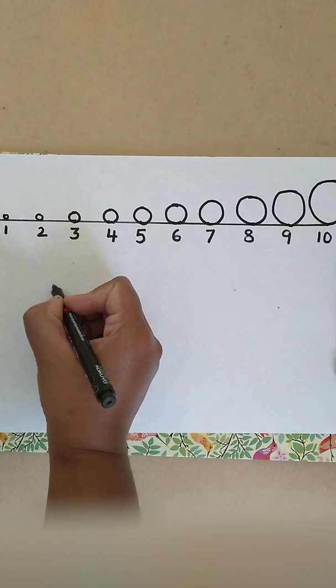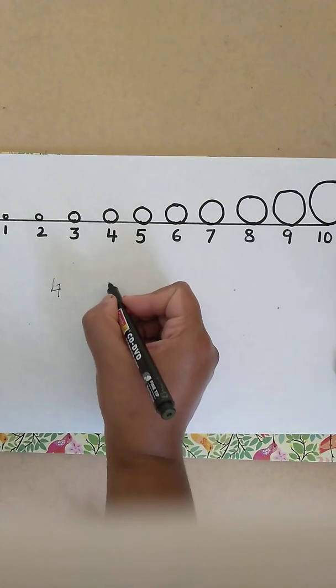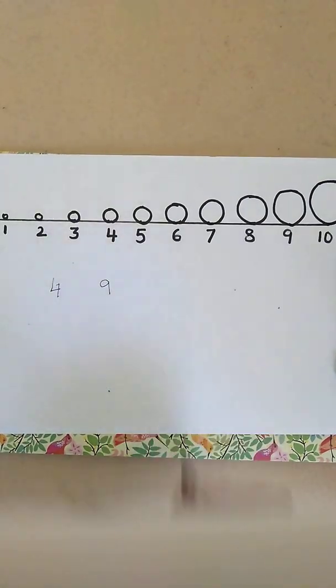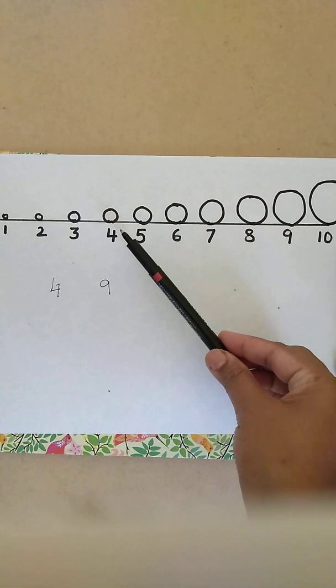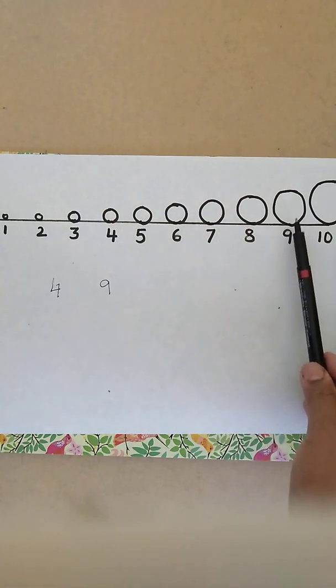Is it 4 or is it 9? All the child has to do is look at the number line, 4 and 9. Which is the bigger number? Yes, he looks at the bigger circle and he can say 9 is the bigger number.